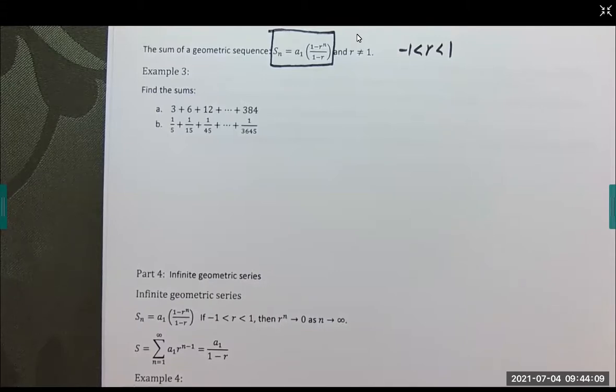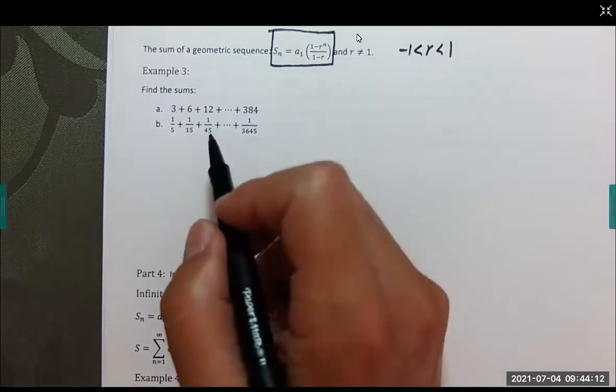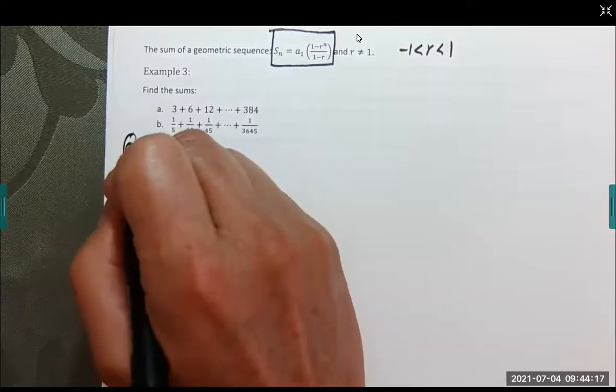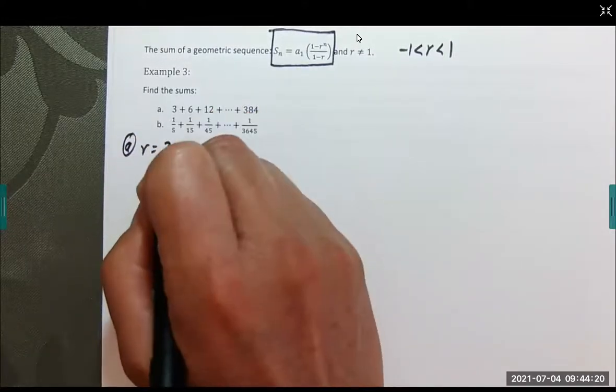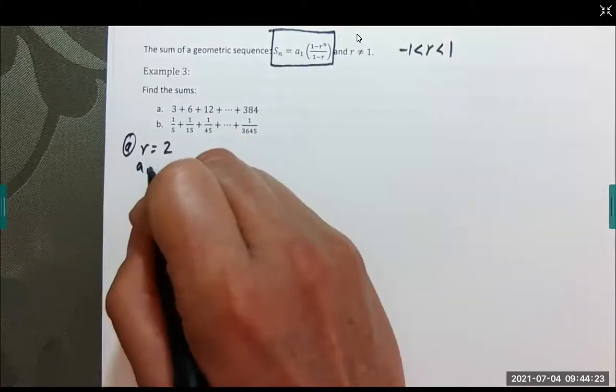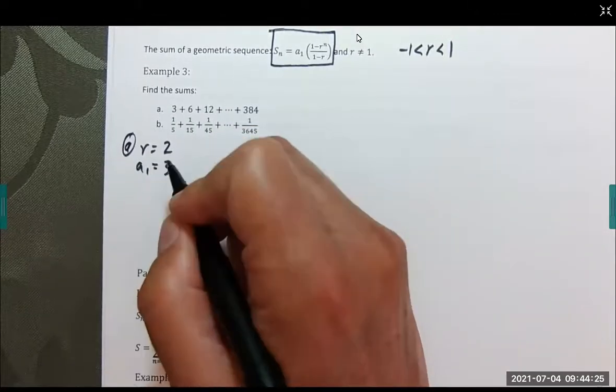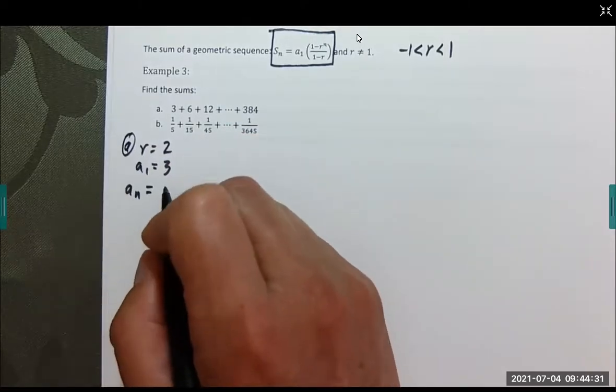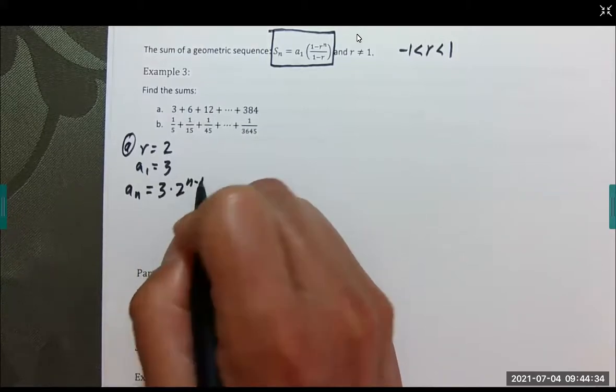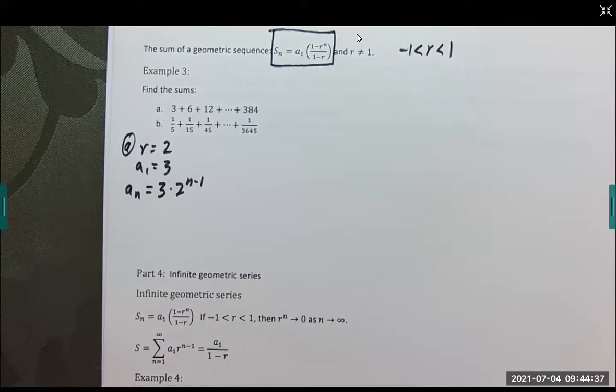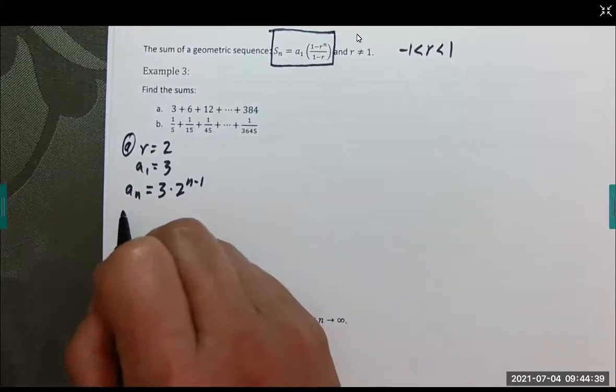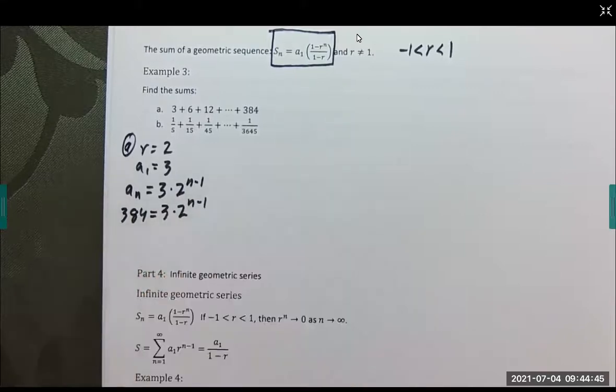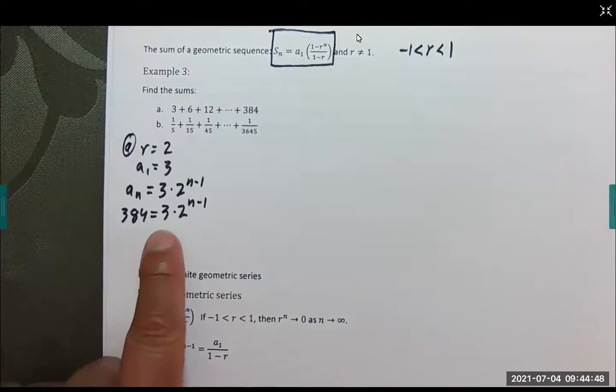Let's use this formula and find the sum. First, we're going to have to find n because we need to know how many terms we have. The common ratio is 6 divided by 3, that's 2. A sub 1 is 3. We're going to use a sub n equals 3 times 2 to the n minus 1 power. We know that the last term is 384.